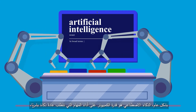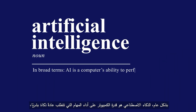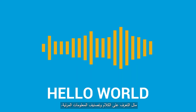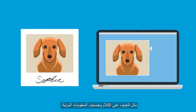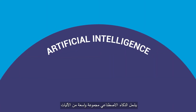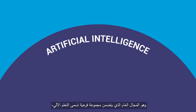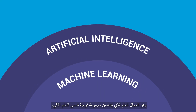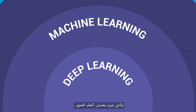In broad terms, AI is a computer's ability to perform tasks that normally require human intelligence, like recognizing speech and categorizing visual information. AI encompasses a much wider range of mechanisms and is the general field that includes a subset called machine learning, which in turn includes deep learning.